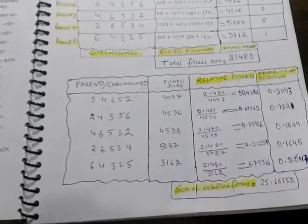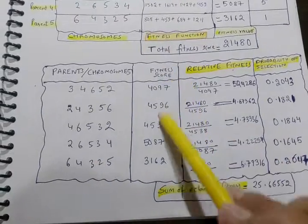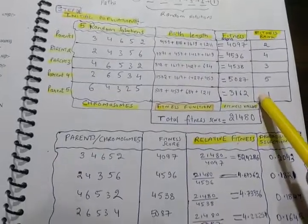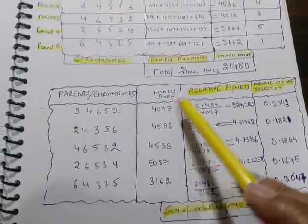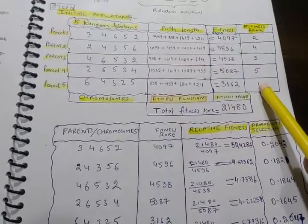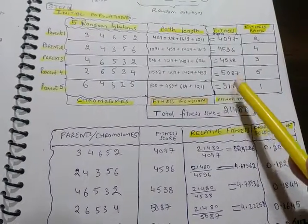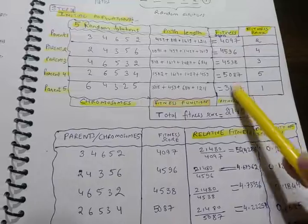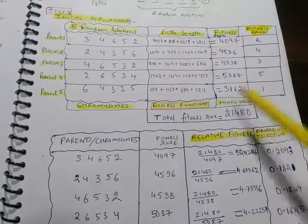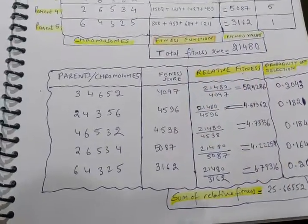In the next table, I have drawn the parent chromosomes, then the fitness score. We know that it is a minimization problem so we have to find the probability of selection. This has the highest probability of selection, but this number is small. If we divide it by total number, the probability will be very low and will not be selected first, so we have to invert the probability.